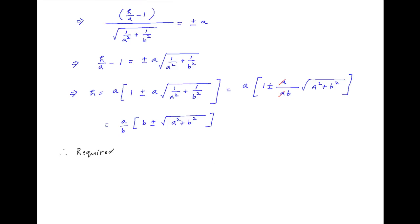Therefore, the coordinates of the required point on the x-axis are a upon b times the bracket b plus or minus the square root of a squared plus b squared, and 0. This is the required answer.